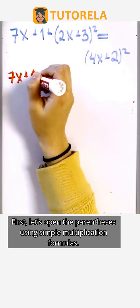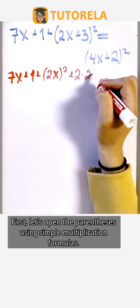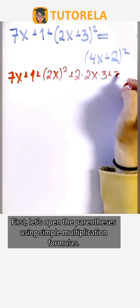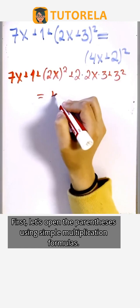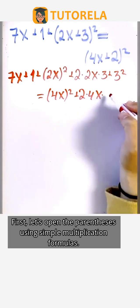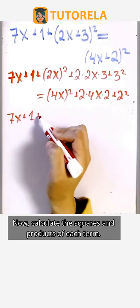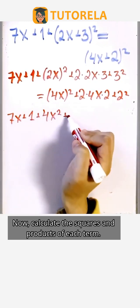First, let's open the parentheses using simple multiplication formulas. Now calculate the squares and products of each term.